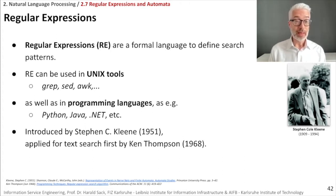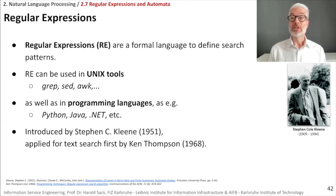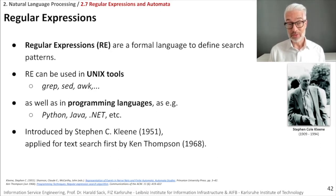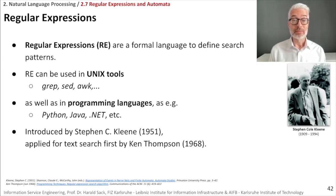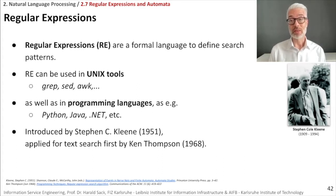In his 1951 paper, Kleene introduced regular expressions to describe neural networks. McCulloch and Pitts had already introduced neural networks in the late 1940s, describing how a neuron works, and Kleene used regular expressions to formalize this. Interestingly, we will revisit the McCulloch-Pitts neuron later in the machine learning section of this lecture.